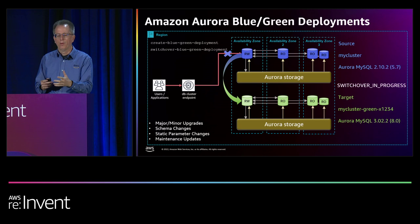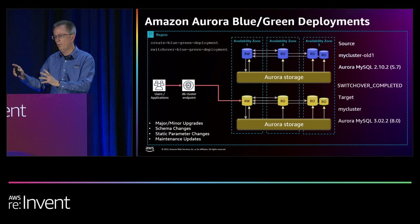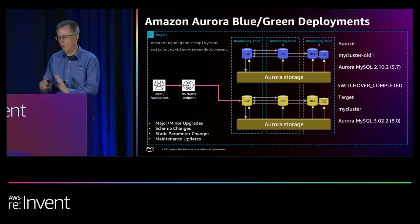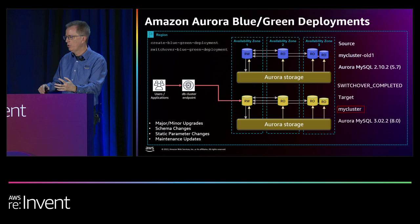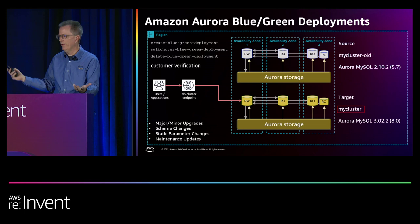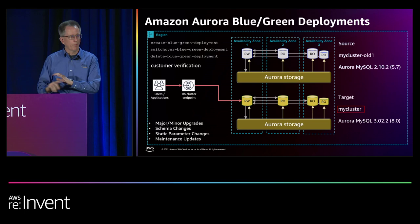After switchover you still have a blue-green deployment object — you clean it up by deleting it, which disassociates the two clusters but leaves the original cluster for any customer verification. Once you've verified, you can remove everything. The whole process is not dramatic — you have time for verification, and you end up with an upgraded cluster that looks exactly the same as what you started with. You could do all this yourself but it's a lot of workflow steps to get right.